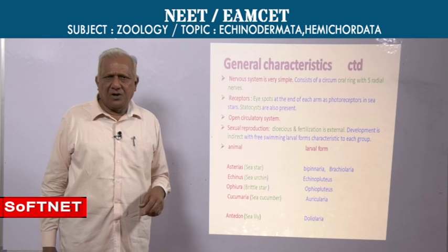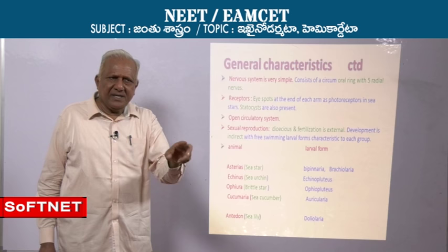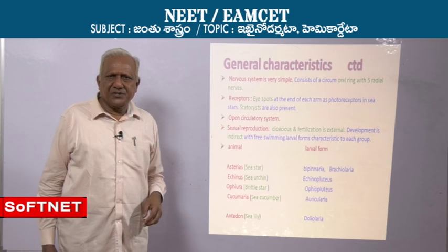Open circulatory system — the exception is Cephalopoda, where you find a closed type of blood vascular system. Their eyes like the eyes of vertebrates are present.